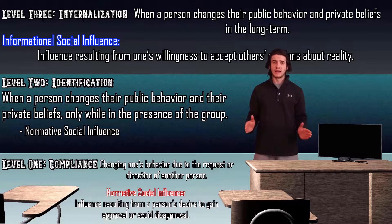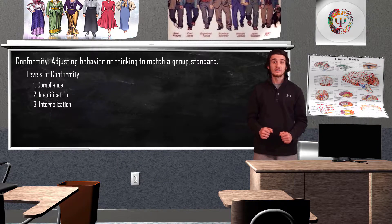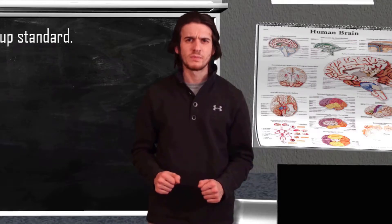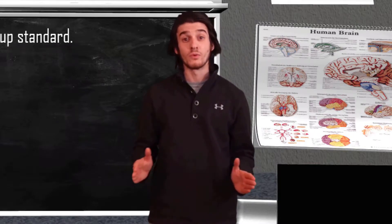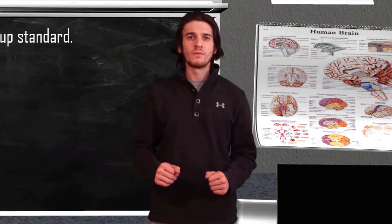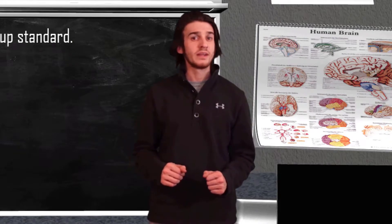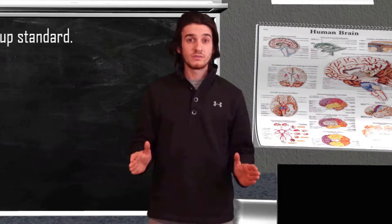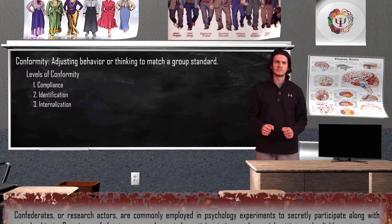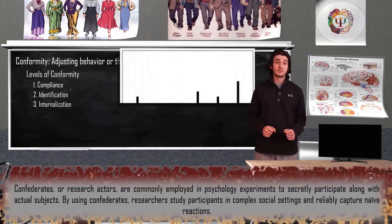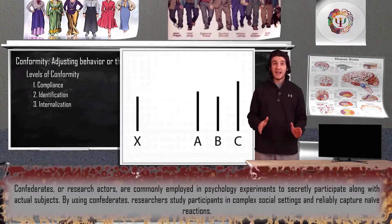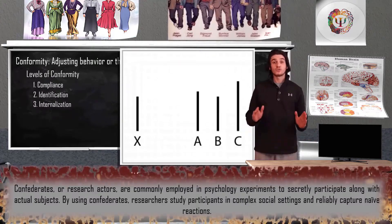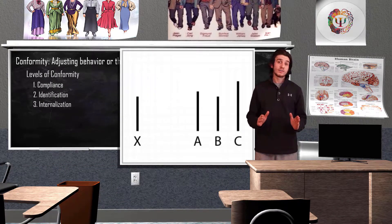Moving on, we are going to focus on the first level — compliance — as we discuss Solomon Asch's experiment on conformity. In the 1950s, Asch ran several experiments testing an individual's willingness to conform. He gathered a group of 50 male college students to participate in a vision test. Asch would put a test subject in a room with a group of other guys who, unknowingly to the test subject, were participating in the experiment as confederates. They were shown an image and asked to match the line on the left to the correct line on the right.